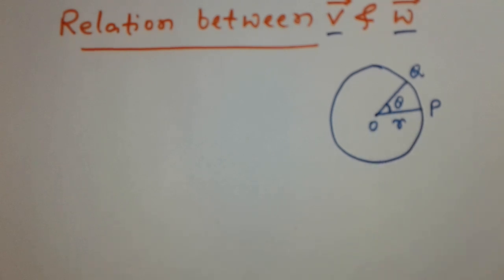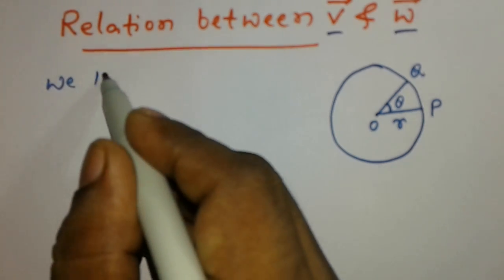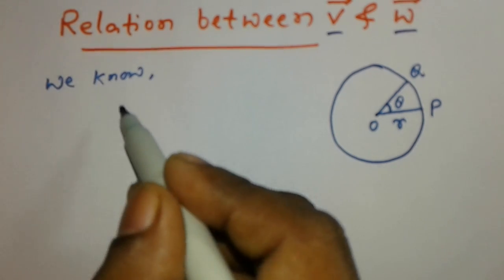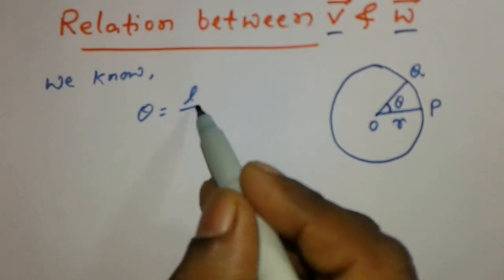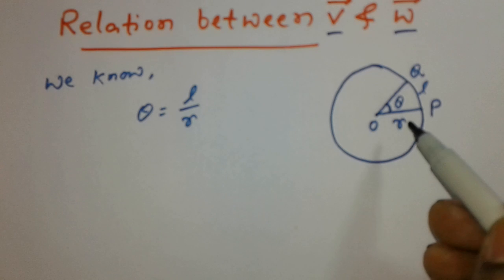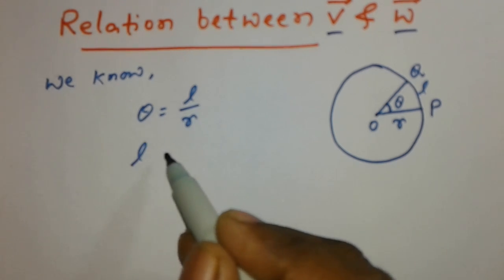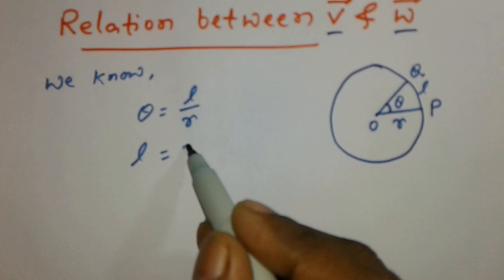So theta is angular displacement. We know angular displacement theta is equal to L by R. This is L and this is R, so we can write L is equal to R into theta.